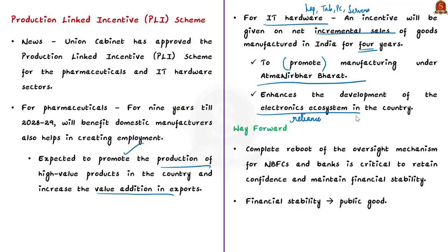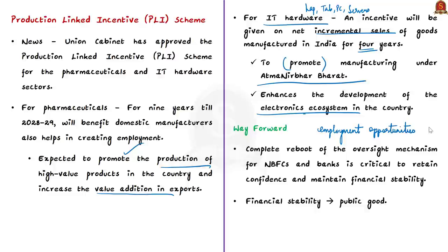The PLI scheme has been in use for many months. Initially the government announced a PLI scheme for medical devices, mobile phones and specified active pharmaceutical ingredients. Later, it was expanded to many sectors including food processing, telecom, electronics, textiles, specialty steel and automobiles. Today's news is that the scheme is now being extended to pharmaceuticals and IT hardware.